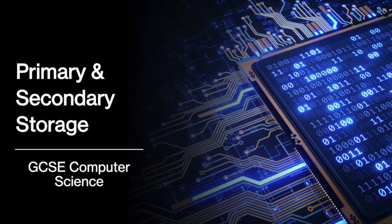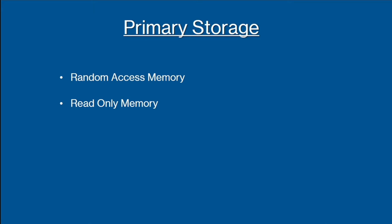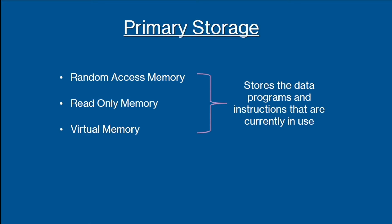First let's have a look at primary storage. There are three main types of primary storage that you need to be aware about: RAM or random access memory, ROM or read-only memory, and virtual memory. A computer needs primary storage as it stores the data and programs that are currently in use.